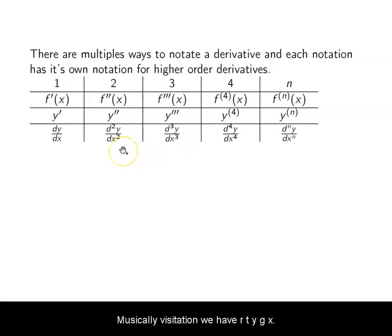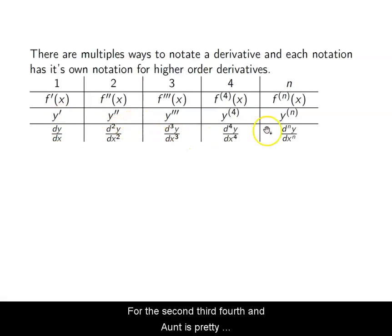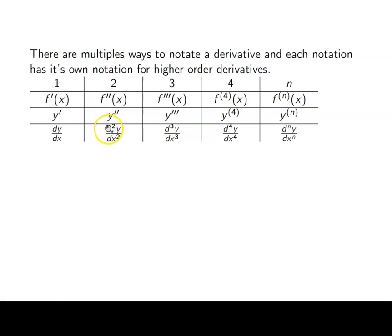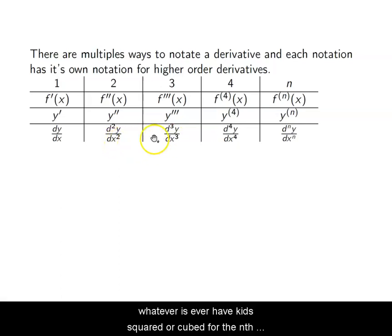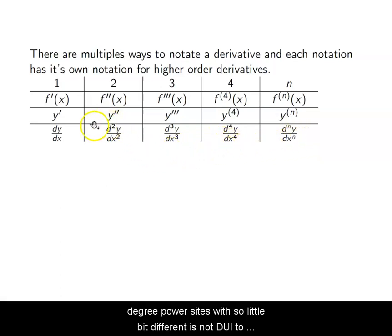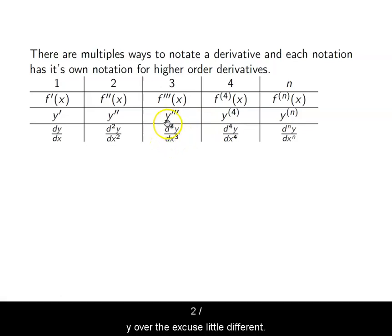When we use the Leibniz notation, we have our dy/dx. For the second, third, fourth, and nth derivatives, it's pretty straightforward. The d in the differential dy gets the square, cube, or nth power, and in the denominator, the input variable x — or t, or whatever it is — gets the squared, cubed, or nth degree power assigned to it. So it's d cubed y over dx cubed, not dy to the third.